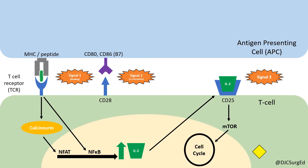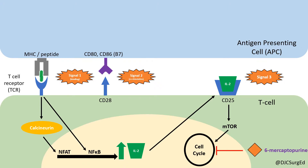Azathioprine is a purine analog that undergoes hepatic conversion to 6-mercaptopurine, which inhibits DNA synthesis. Mycophenolic acid inhibits IMP dehydrogenase and blocks purine synthesis.